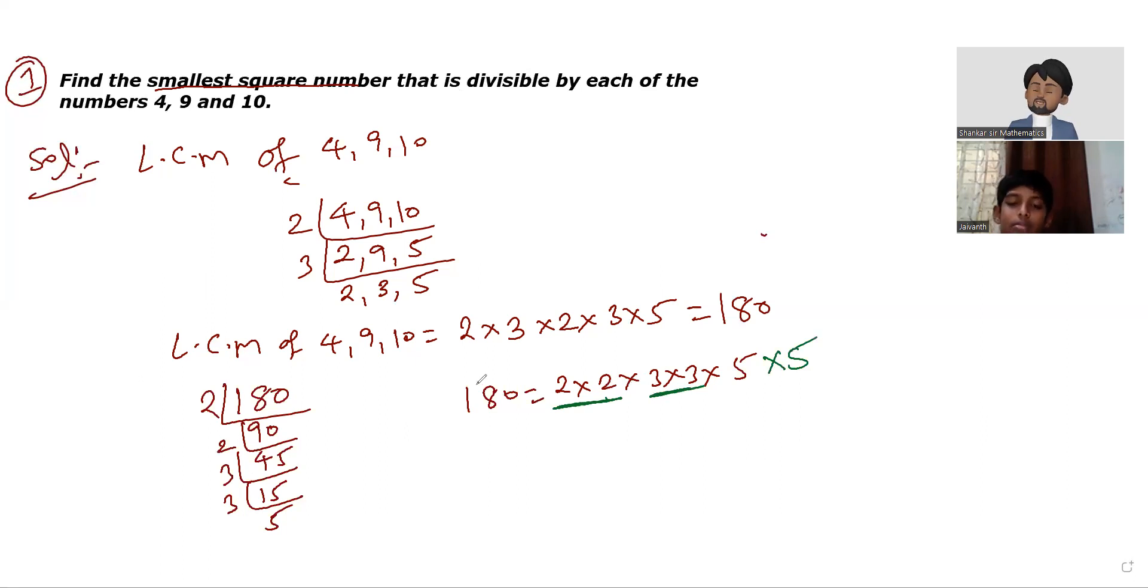So if I'm going to do 180×5, then definitely I'll get a square number. Right? Now what I'm going to do in the next step? Why? Because 5 is not available. So what I'm going to do? 180×5, and this number right side also I am going to multiply with 5.